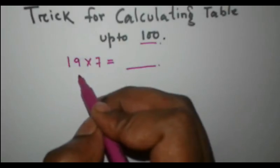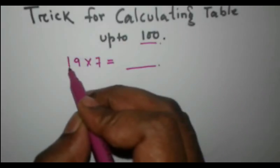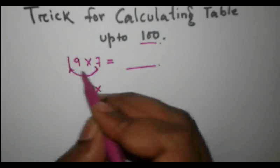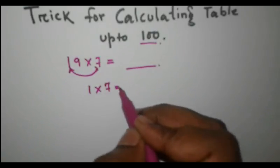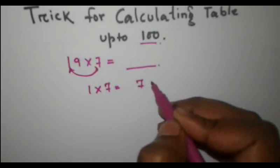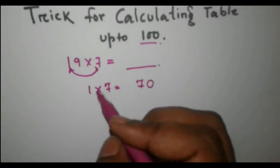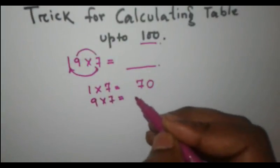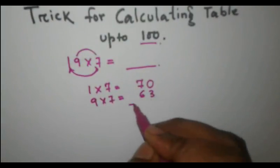We have to multiply 1 and 7. 1 into 7 is equal to 7, and we will add a 0 from our side. Then again we will multiply 9 into 7. 9 into 7 is equal to 63, so we will add it.